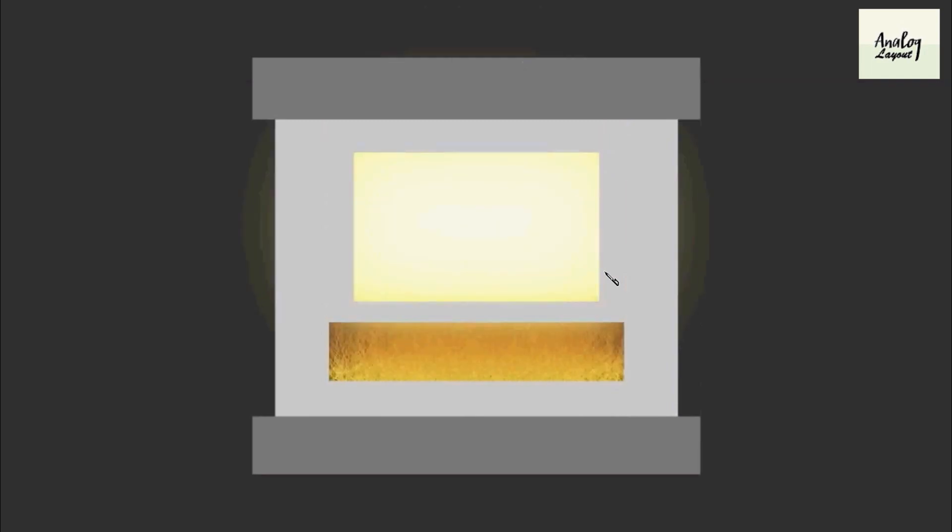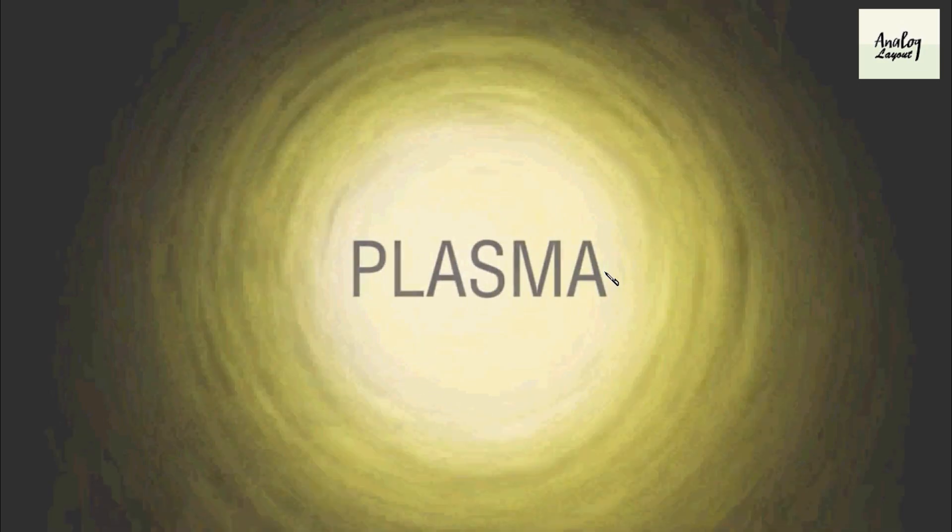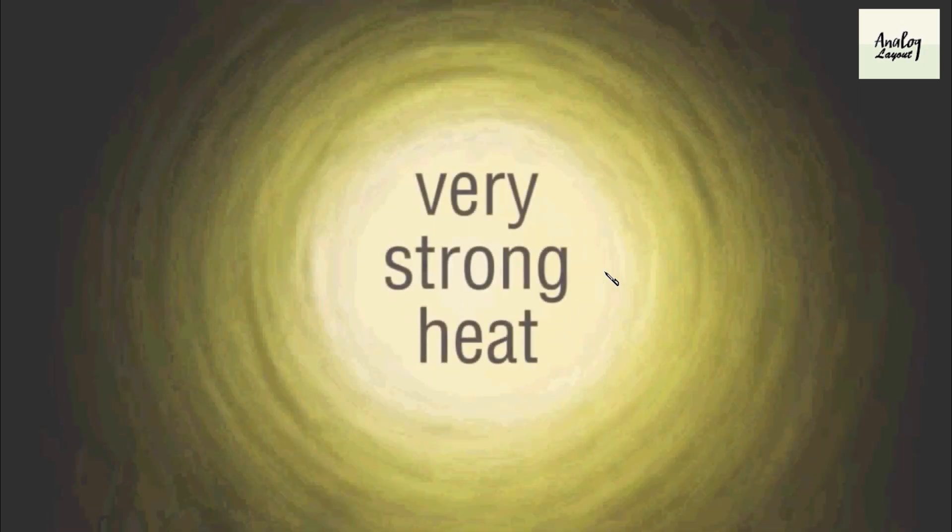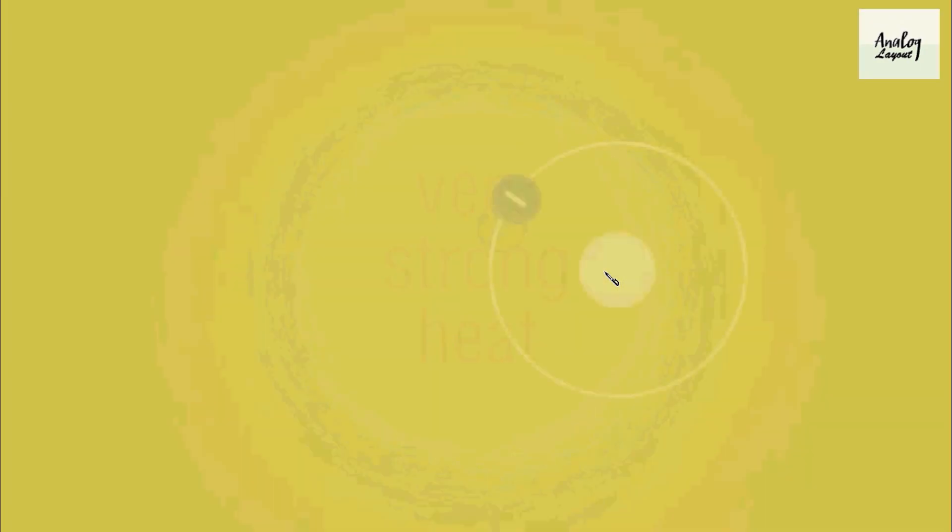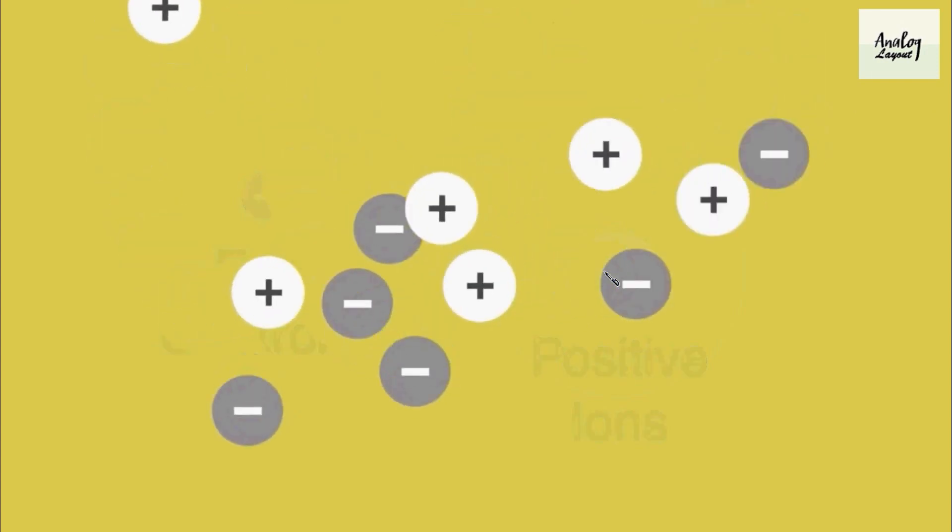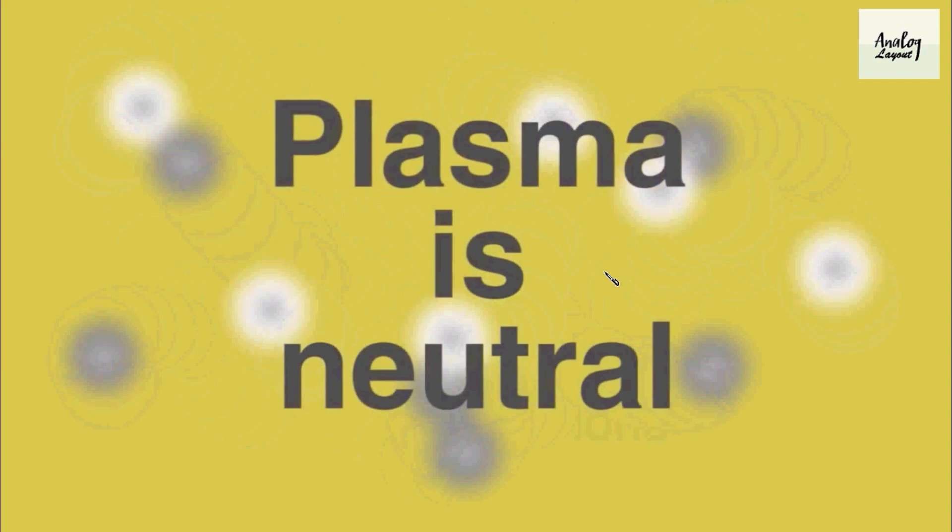After reaching the gas stage, still more heat and more energy is applied to the same gas. We are getting a new energy form called plasma. Whenever we convert from gas stage to plasma stage, we need very strong heat energy. If the atoms get very high energy, the electrons will move away from the atom and create free electrons and positive ions. Any plasma will have equal number of positive and negative charges, so that's why plasma is always neutral.